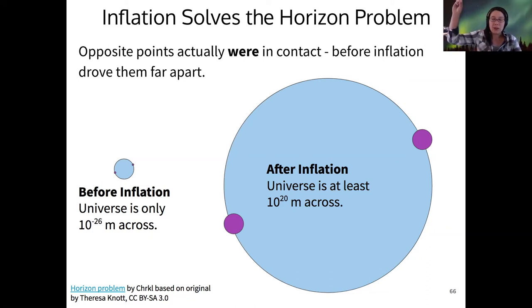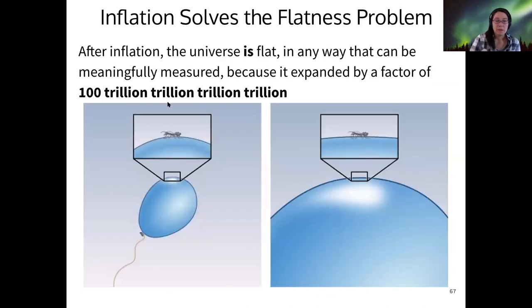Inflation extremely blows up the universe in a very short amount of time. After inflation, points on the opposite side of the sky are still the same temperature because they were just 10 to the minus 10 seconds ago neighbors. That's how we solve the horizon problem.